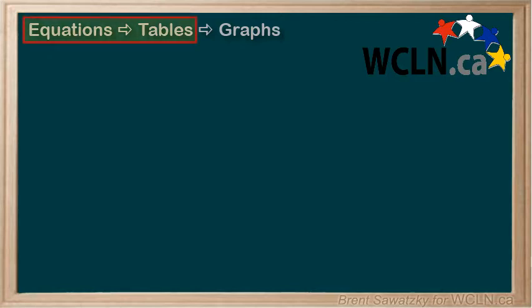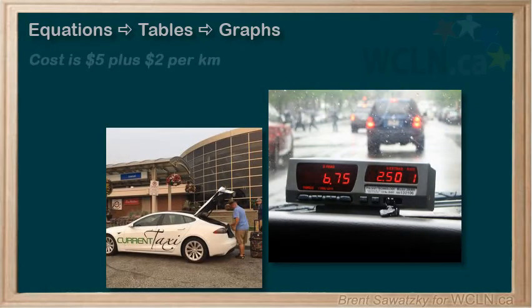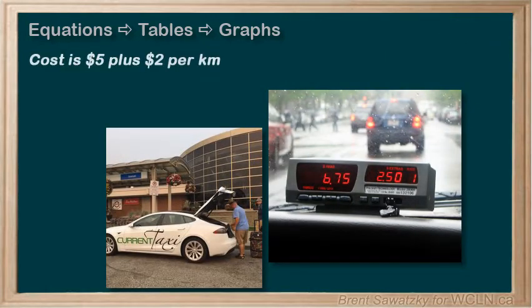Let's start with changing an equation format to a table format. For example, the cost of taking a taxi is a flat rate of $5, and then $2 per kilometer in addition to that.